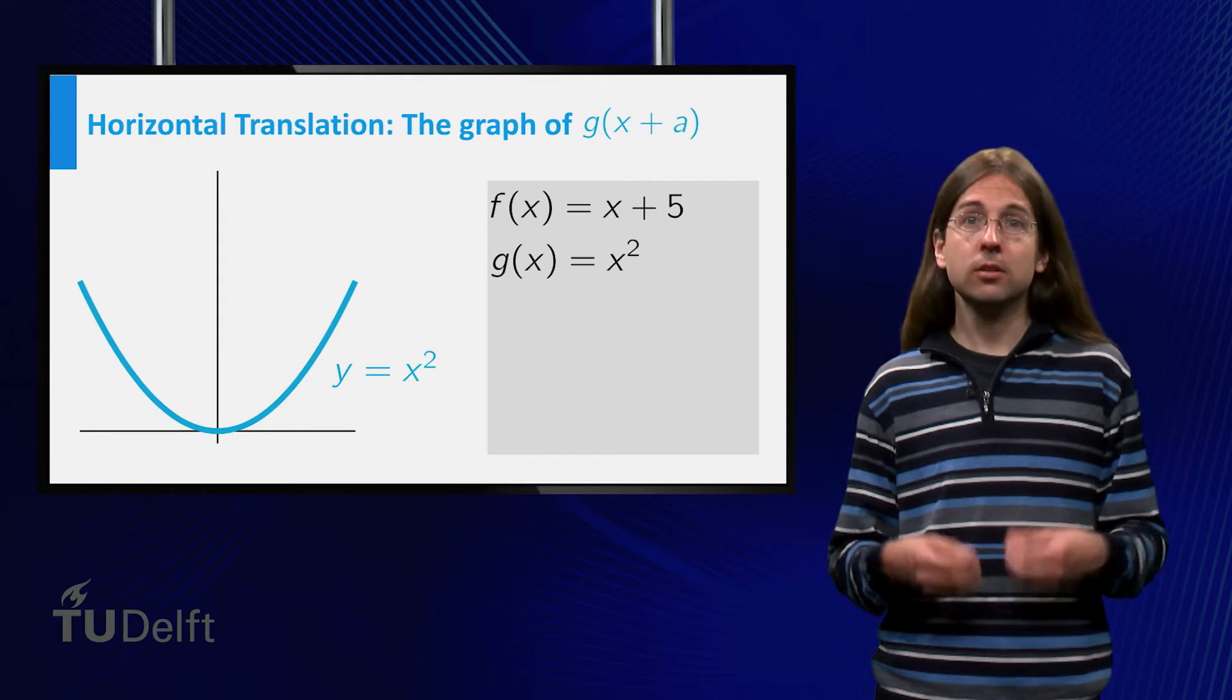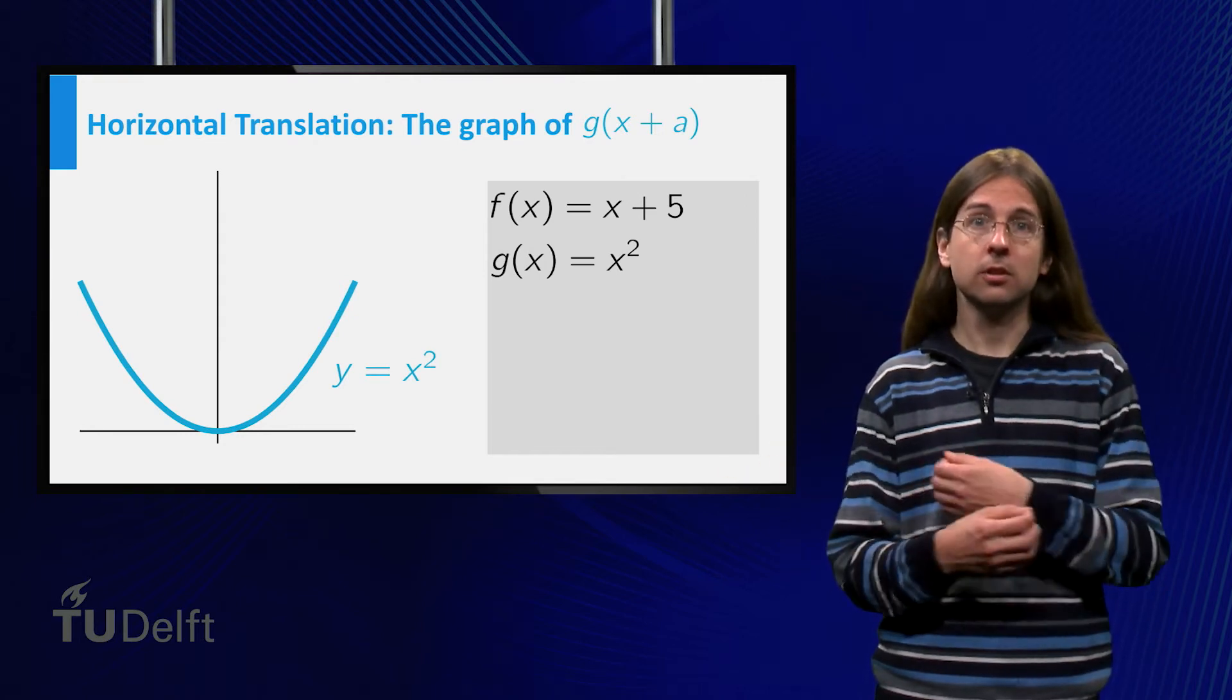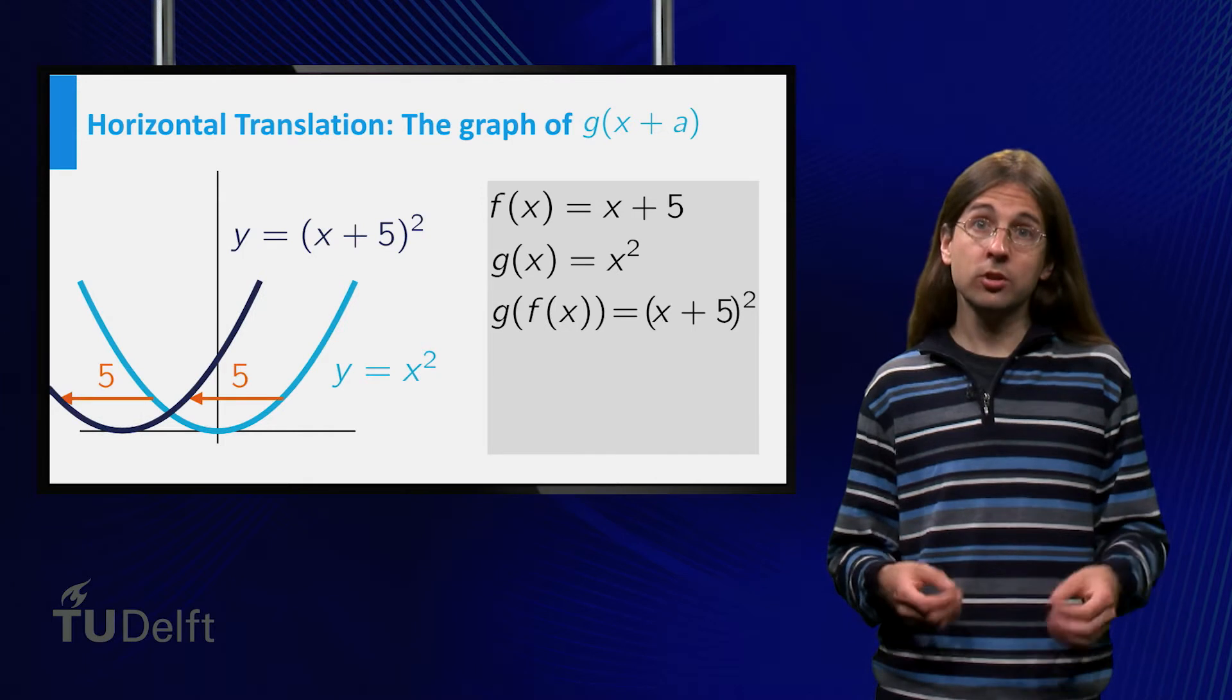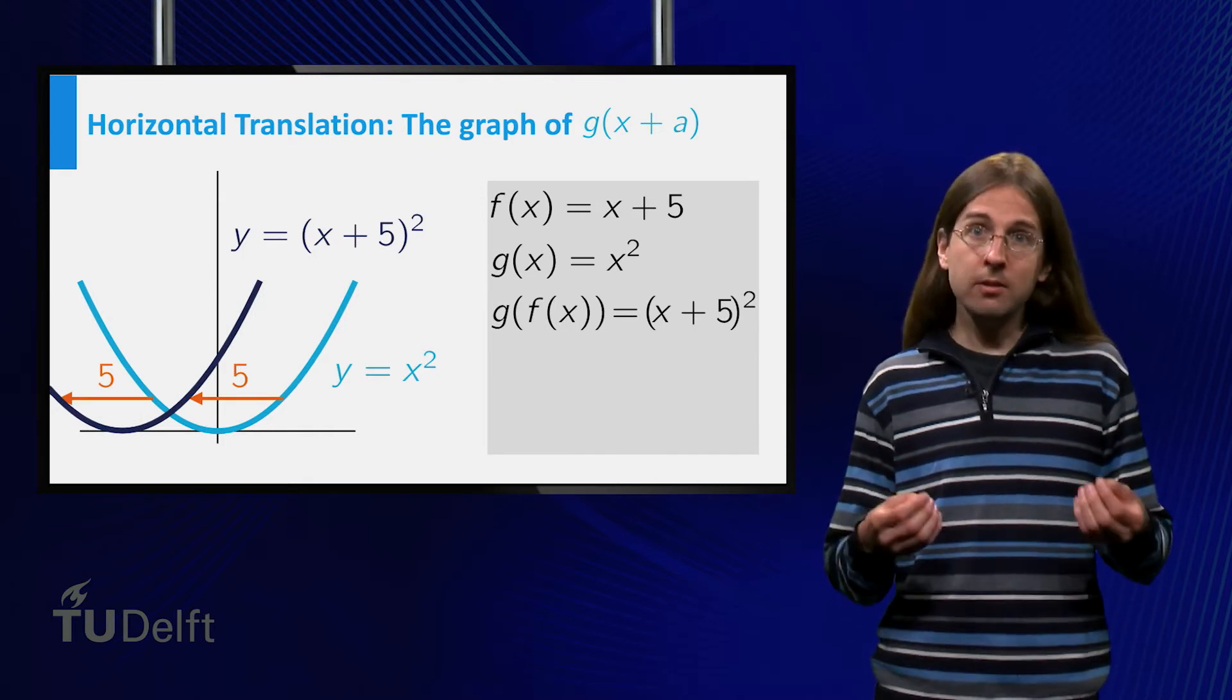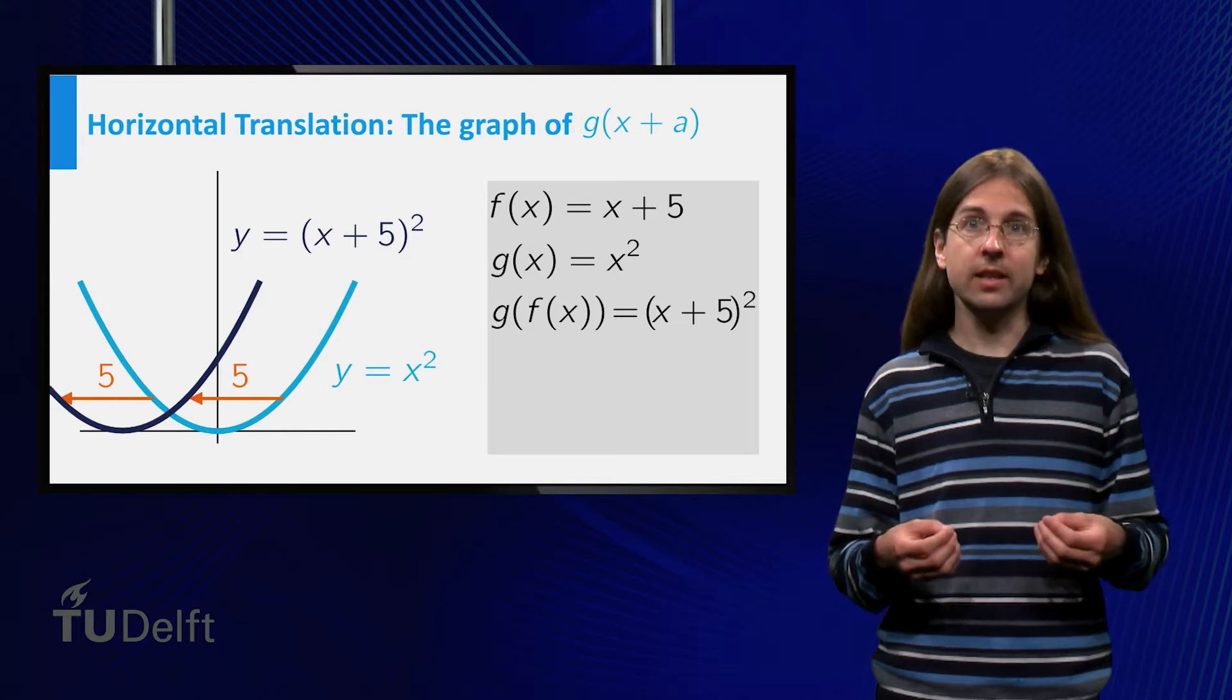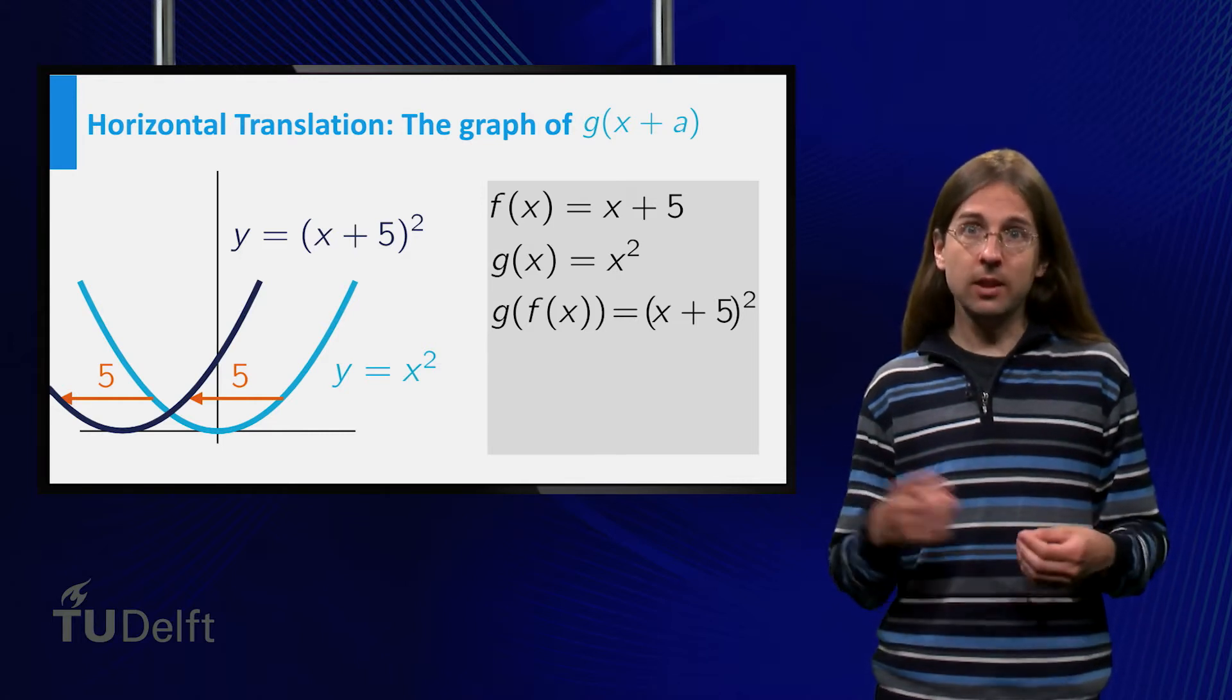Now we consider the composition in the alternative order. g of f equals x plus 5 squared. As you can see the graph is again translated, but now it is shifted 5 to the left.